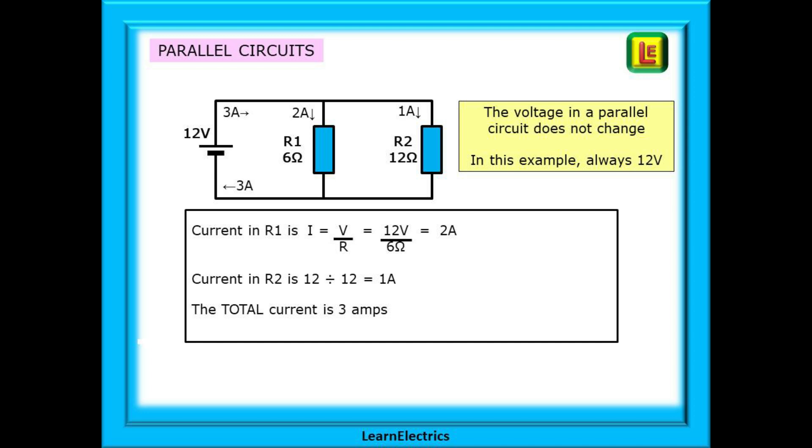The current in R1 will be 12 volts divided by 6 ohms, which gives us 2 amps. The resistance of R2 is bigger, so the current should be lower. Calculating 12 volts divided by 12 ohms, we have a current of 1 amp. The total current in the circuit is therefore 2 amps plus 1 amp, which is 3 amps.